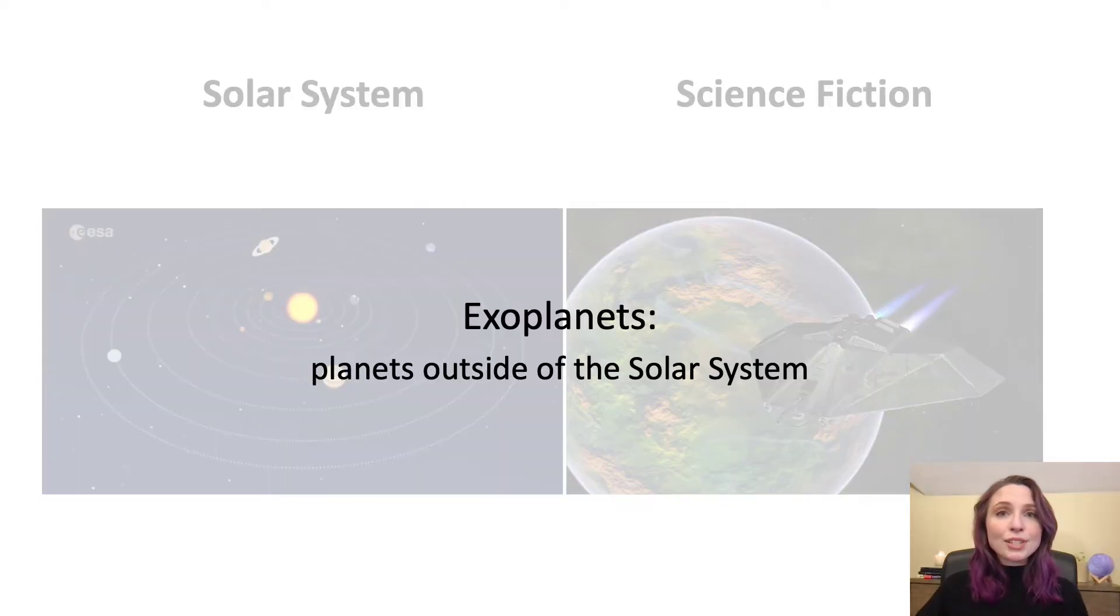We call these planets outside of our solar system exoplanets. And up until only about 25 years ago, exoplanets were a thing of fiction because no one had found one yet. And actually, science fiction was really helpful to astronomers back then because it helped them imagine something that they had never seen. And sometimes that's how things in science get discovered. It's not always that scientists find something by accident. Sometimes scientists imagine something that might exist and then go out to look for it.